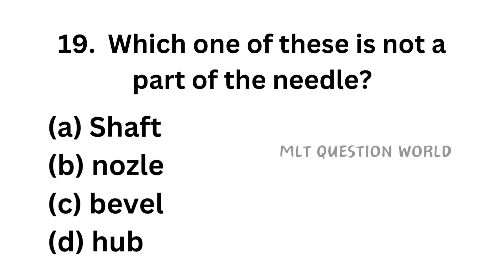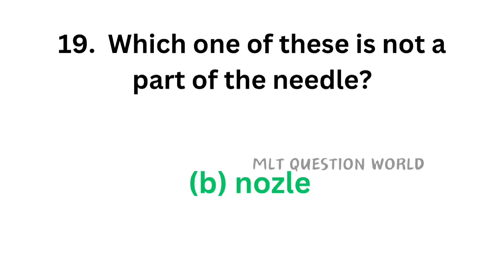Question number 19. Which one of these is not a part of the needle? Option A, Shaft; option B, Nozzle; option C, Bevel; option D, Hub. The correct answer is option B, Nozzle. Nozzle is the part of a syringe. Hub, shaft, and bevel are the parts of needle.